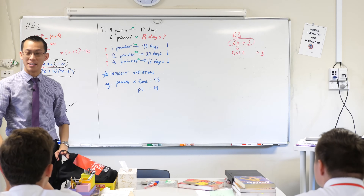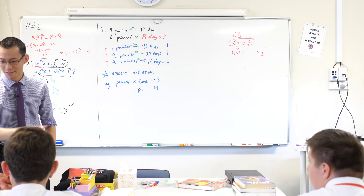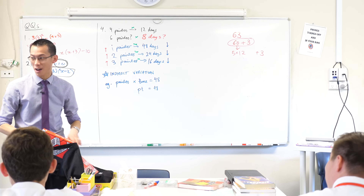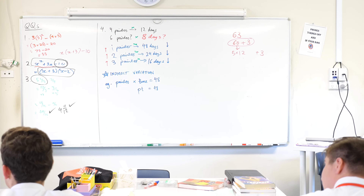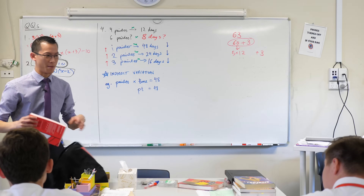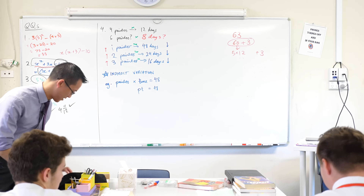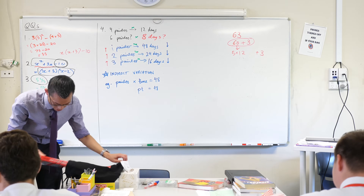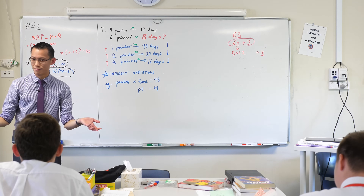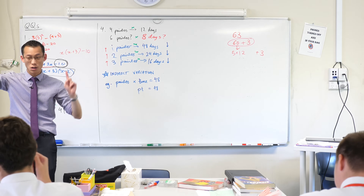For example — this is cheesy, but it gives you something to remember — if you had $30 you could buy one book; $60, two books; $90, three books; $120, four books. More money, more books. That's direct variation.